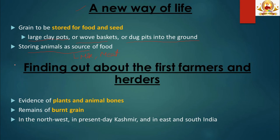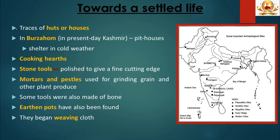So how do we find out about the first farmers and herders? Archaeologists study evidence of plants and animal bones. One of the most exciting findings is remains of burnt grain, which help identify what crops were grown. They can also identify bones of different animals. Important regions with evidence of first farmers and herders include the northwest of the subcontinent, present-day Kashmir, and east and south India. Archaeologists have found traces of huts and houses from several sites.